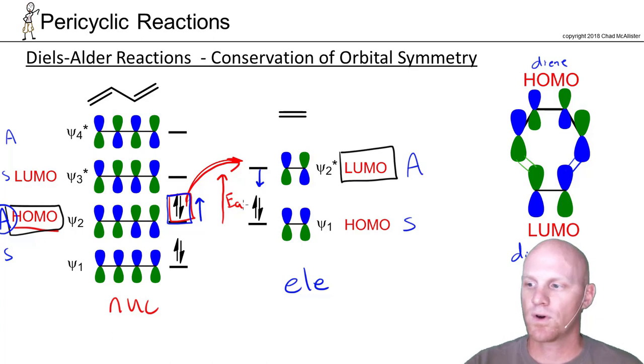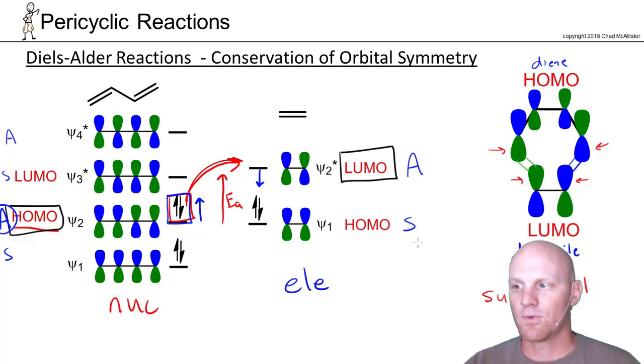It turns out there's a special word here we're going to look at, and it's called suprafacial. It's when both ends of the conjugated system are reacting on the same face. For the diene, it's reacting on the bottom face on this side and the bottom face on this side - that's suprafacial. For the dienophile, it's acting on the top face on this side and the top face on this side - that's suprafacial. We'll find out this conservation of orbital symmetry requires that the reaction go with what we call a suprafacial-suprafacial interaction or a suprafacial-suprafacial transition state.